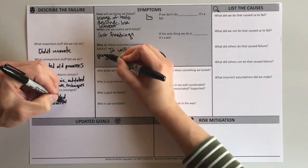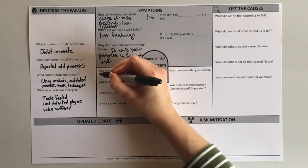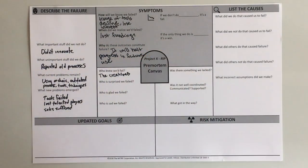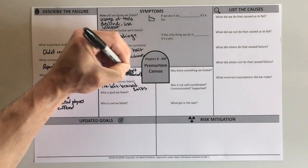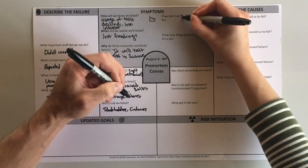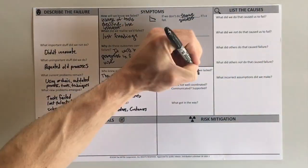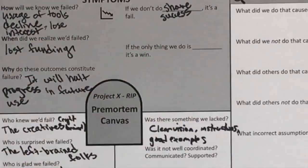Invite everyone to imagine it is two years in the future. Your current project, activity, or initiative has utterly failed. Describe the failure in vivid detail, exploring worst-case scenarios. You don't have to answer all of the questions, but perhaps the most important question to answer is, if the only thing we do is X, it's a win.